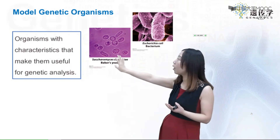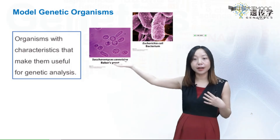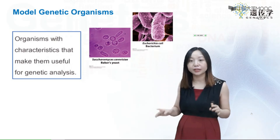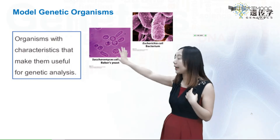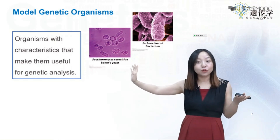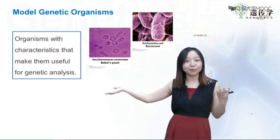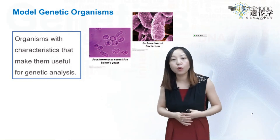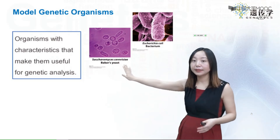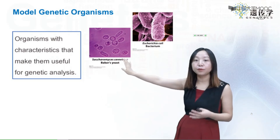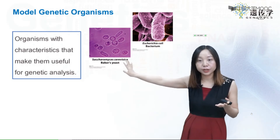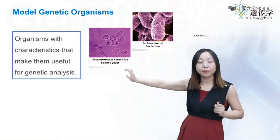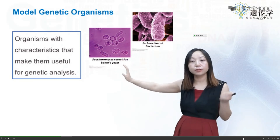By looking at a yeast cell and looking at yourself, you probably find absolutely no similarity between us and these little organisms. But quite dramatically, we share 70% of the genes — 70% of human genes can find homologues in yeast. Studies in yeast have revealed many fundamental regulations of cellular processes, such as DNA replication, transcription, and cell division.